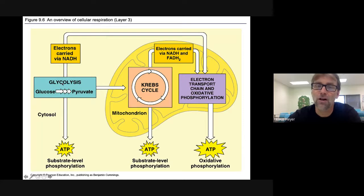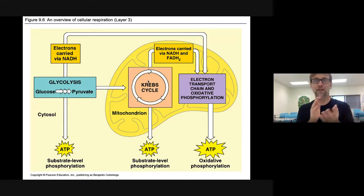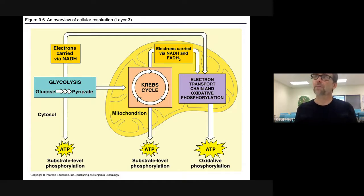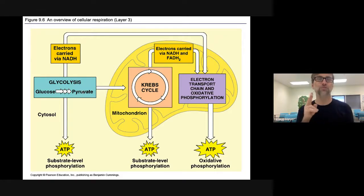Now we're going to go to the Krebs cycle. Between glycolysis and Krebs cycle there's like an intermediate stage 1.5 right in the middle — we've got to take the pyruvate and tweak it a little bit, because the Krebs cycle will not accept a molecule bigger than two carbons.